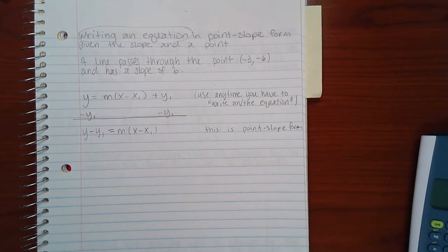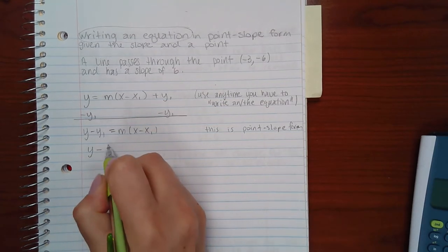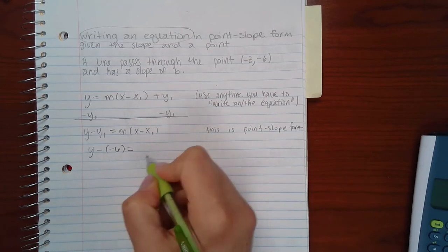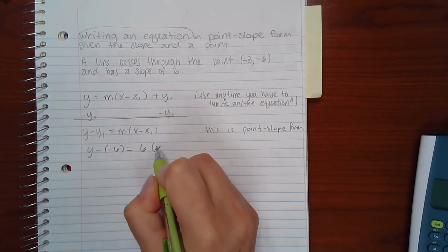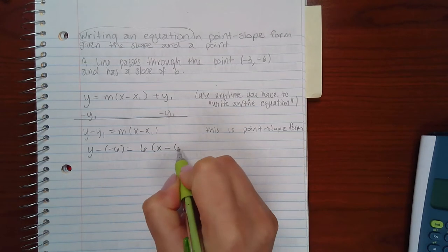And then it's just a matter of plugging it in. Plug in your y coordinate, which is negative 6. Plug in your slope, which is 6. And plug in your x coordinate, which is negative 3.